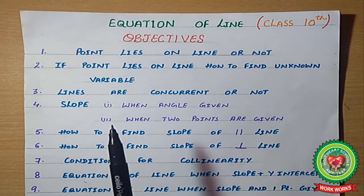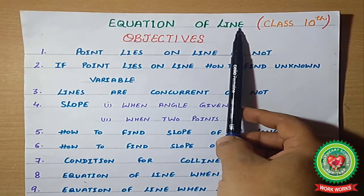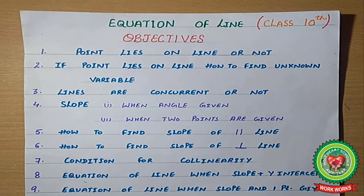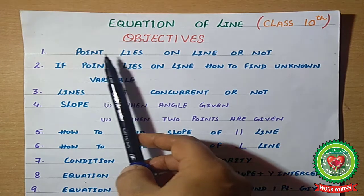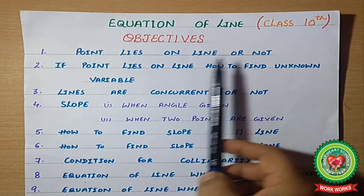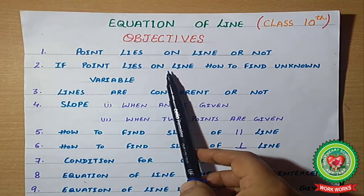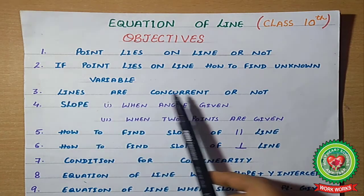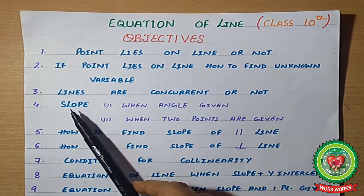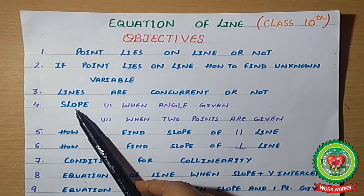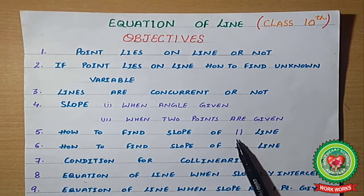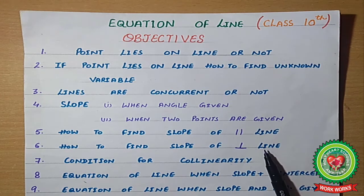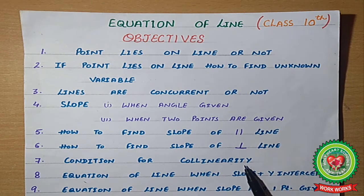Hello students, good morning. As we have already started the topic 'Equation of Line', in this topic we have already learned so many concepts: whether a point lies on a line or not, how to find unknown variables, whether lines are concurrent or not, the concept of slope, conditions for slope for parallel and perpendicular lines, and the conditions of collinearity.